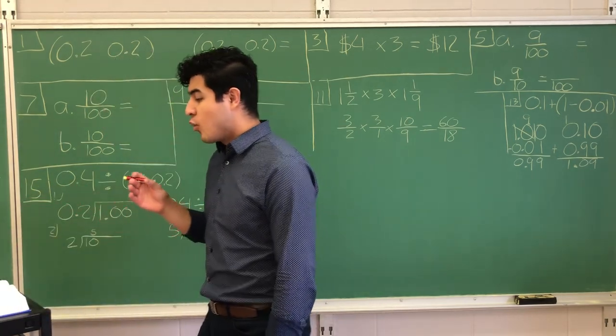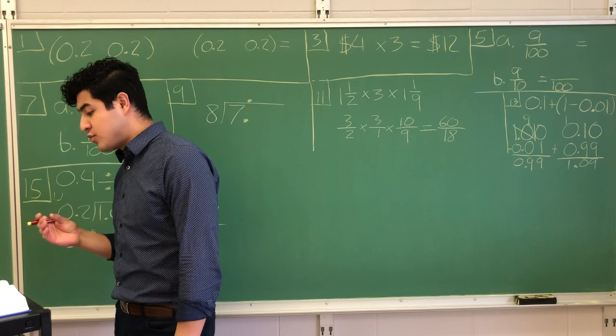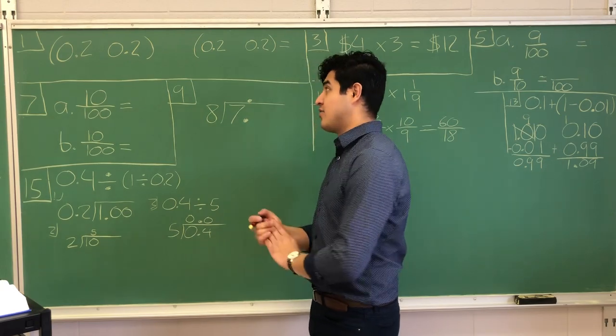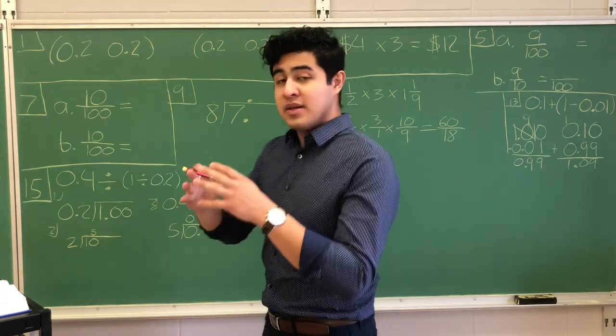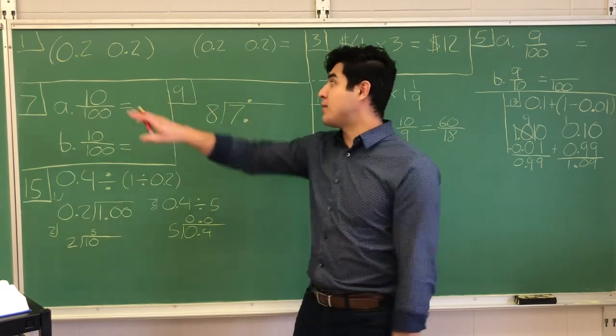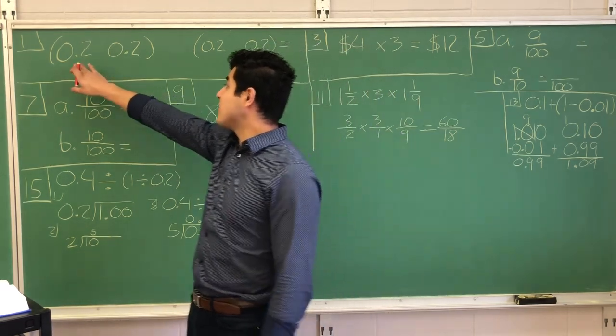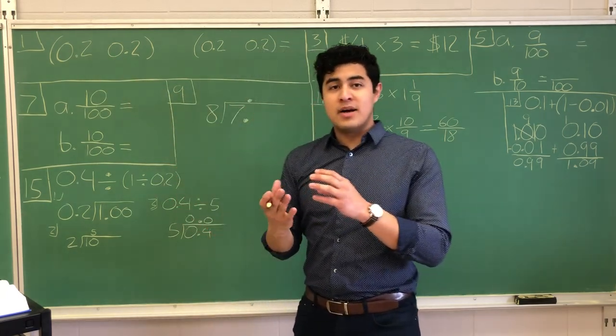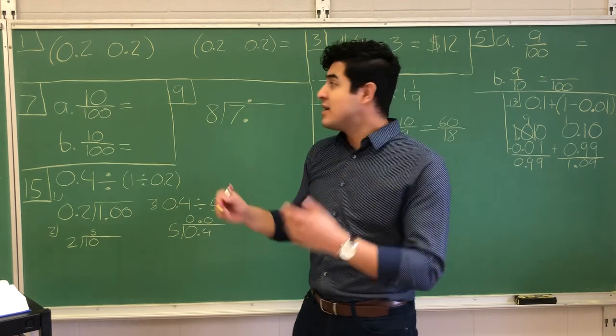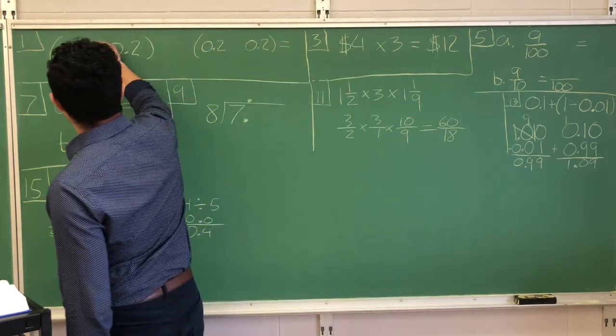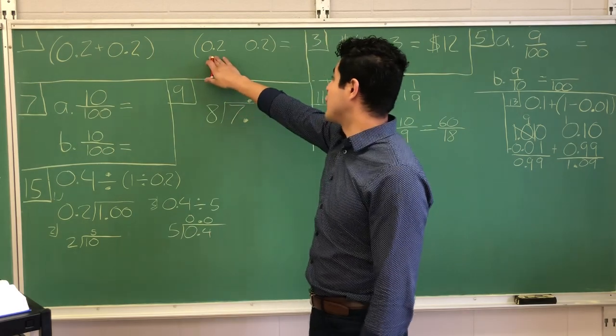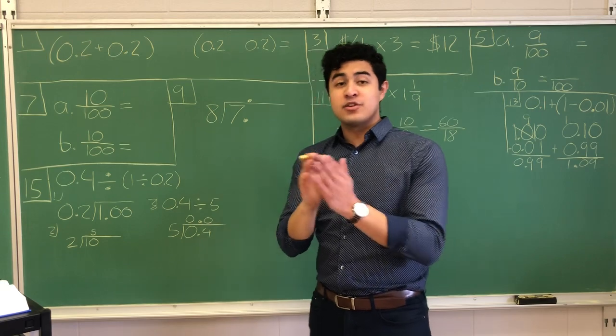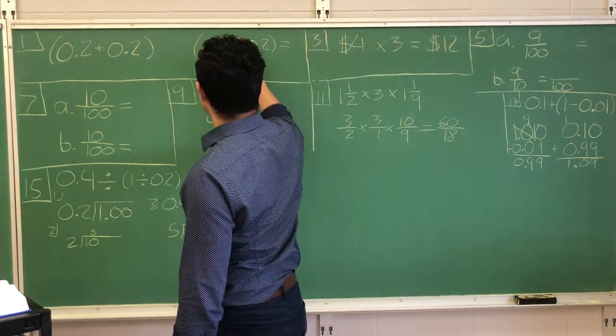So I'm going to read it to you real quick. What is the product when the sum of 0.2 and 0.2 is multiplied by the difference of 0.2 and 0.2? So there's two different sets of problems here. I've got my parentheses set up. They are asking for the sum of 0.2 and 0.2. Now the sum, that's the keyword, so that tells me that these numbers are being added together. And then it asks for the difference of 0.2 and 0.2. That's the keyword as well, difference. That's the answer to a subtraction problem.